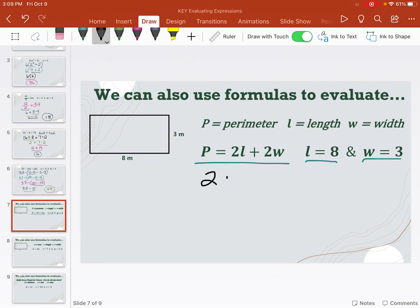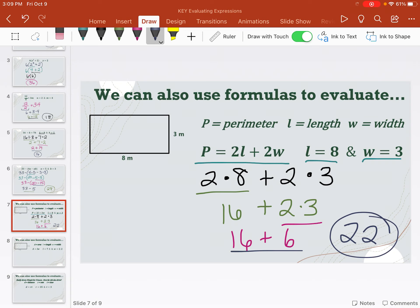P equals 2 times the L, which was 8, plus 2 times the W, which was 3. And then we just solve it in order of operations. So 2 times 8, which is 16, and then 2 times 3, which is 6. And finally, 16 plus 6 is 22. The only extra thing here is, since it is perimeter, we should have a unit. So if I look over at my rectangle, it was meters. So this is really 22 meters.